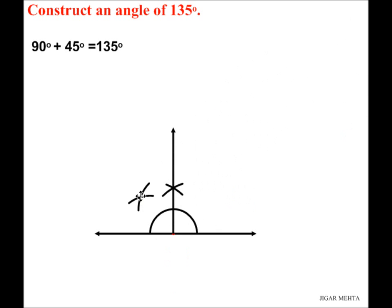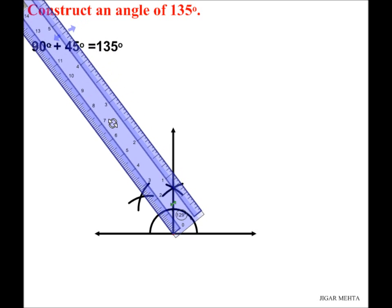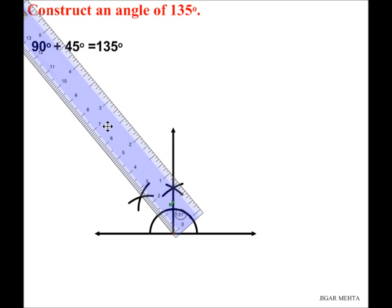I'm going to join this red dot with this point to get my angle of 45 degrees on this side. This is basically a bisection of 90 degrees. So here we go and let me draw a ray.